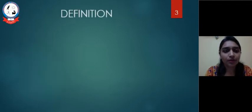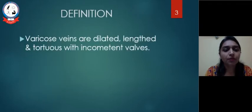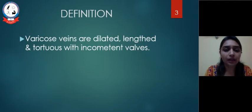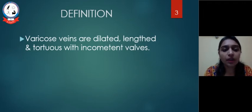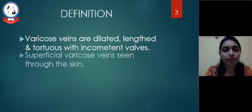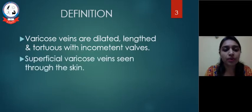Definition: Varicose veins are dilated, lengthened, and tortious with incompetent valves. Superficial varicose veins are seen through the skin.